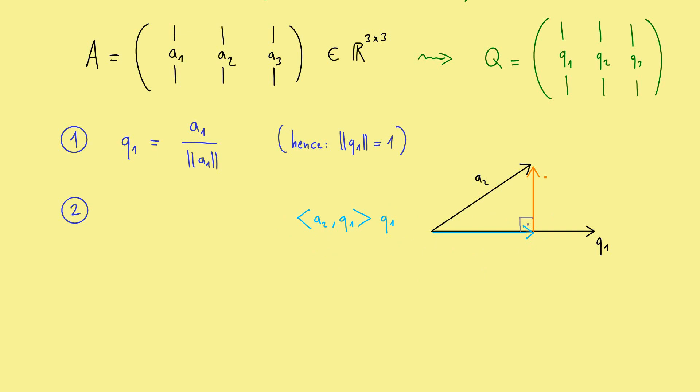However, this is not what we want. We want the orange arrow here. So let's call it A2 perpendicular. And how to calculate that, you should see immediately, because you can write down the vector. And then you see, this is just a vector subtraction. So you write A2 minus the blue vector here. And this gives you the orange vector.